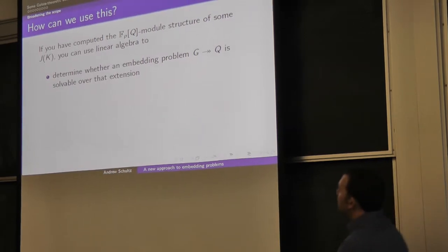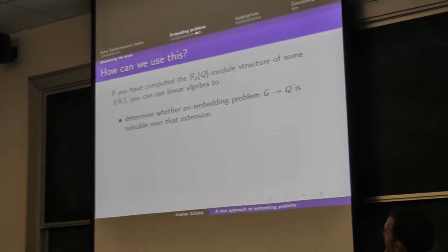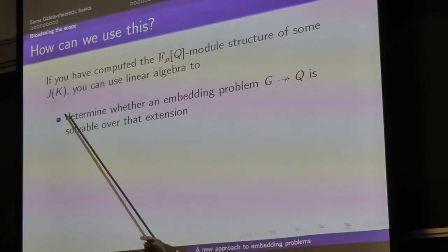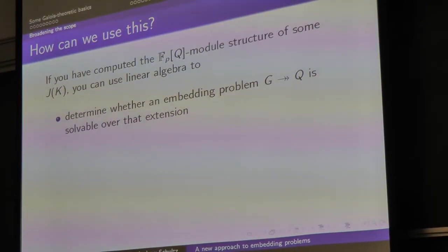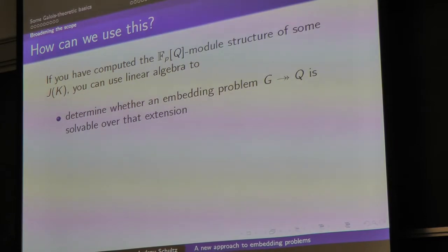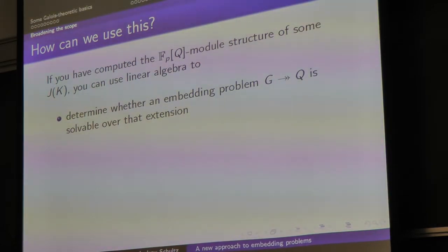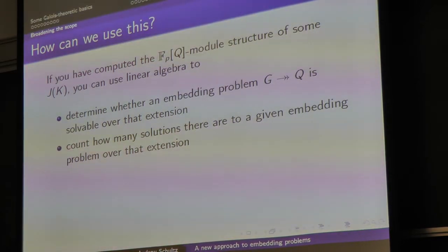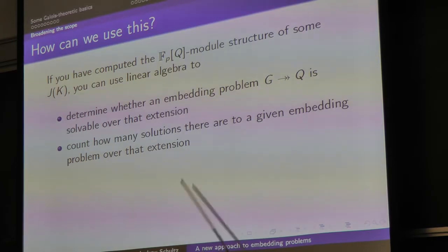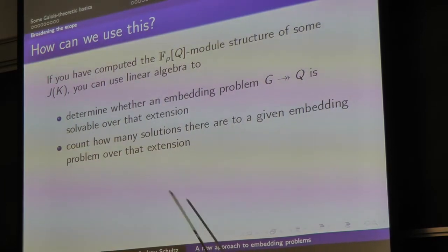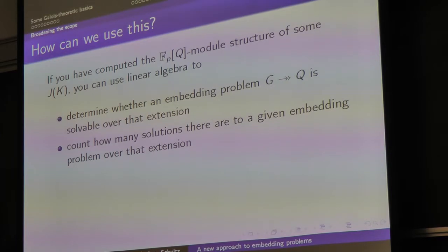There are a few ways you can use this. One thing: if you happen to know the FpQ structure of the parametrizing space J of K for a specific field, then essentially all you have to do to answer embedding problems — those with G mapping to Q — is do a little bit of linear algebra. That lets you answer: does my embedding problem have a solution? And you can actually count exactly how many solutions it has. If J of K is finite, you get very concrete numbers that would otherwise be very difficult to calculate.